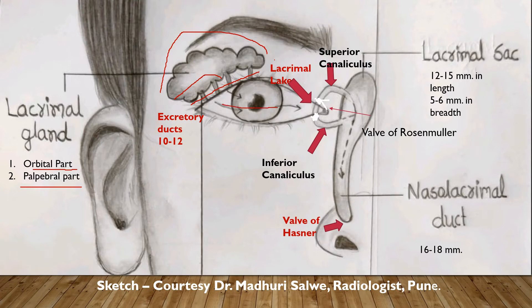The tears then track medially towards the lacrimal lake, which drains into the superior and inferior canaliculi. These ultimately join to form a common canaliculus, which has a valve called the valve of Rosenmuller. The function of this valve is to prevent retrograde flow of tears. The tears then track into the lacrimal sac — usually 12 to 15 millimetres in length and 5 to 6 millimetres in breadth — and further down into the nasolacrimal duct, which opens into the inferior meatus near the inferior nasal turbinate. It also has a valve called the valve of Hasner.